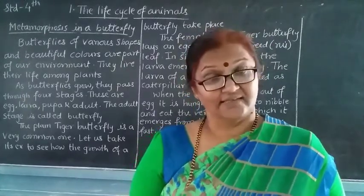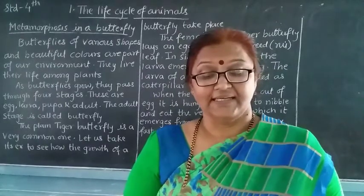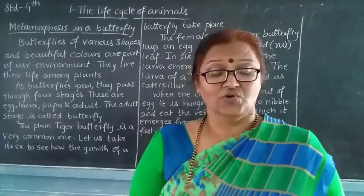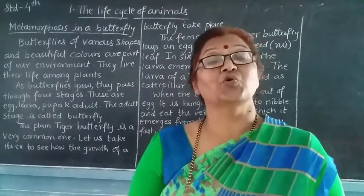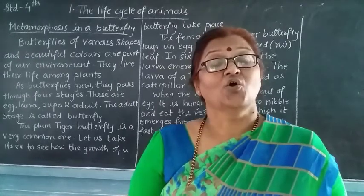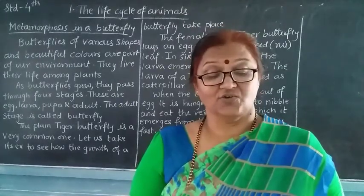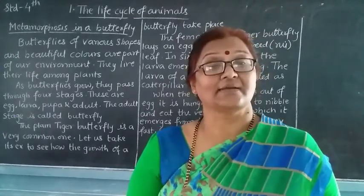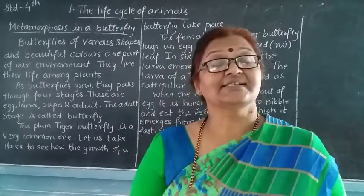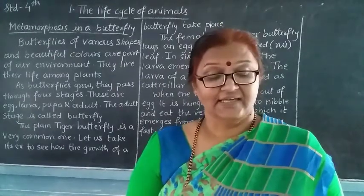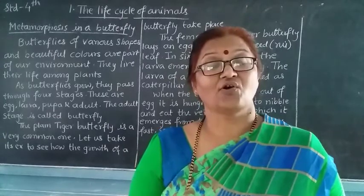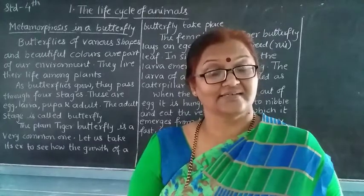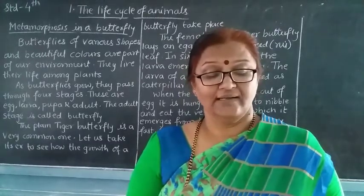It tries to eat the leaf and grows very rapidly again. In two or three days it molts a second time, throwing the old skin and a new skin is formed. In this way it molts four times, shedding its skin each time. It remains in the caterpillar stage for 10 to 12 days.